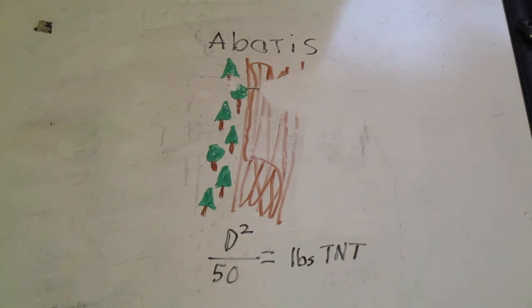In my squad leader book here, it mentions that the estimated time for putting in 75 meters worth of abatis is around two hours per squad. If this is a squad level mission, if it's platoon level you might be able to get it cut down to maybe an hour or hour and a half.